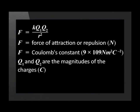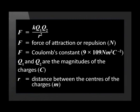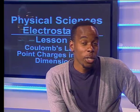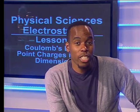Q1 and Q2 are the magnitudes of the charges on the objects. These charges must be measured in Coulombs. R is the distance between the centers of the charged spheres and this must be measured in meters. You may recognize the similarity of this equation to the equation for Newton's law of universal gravitation.